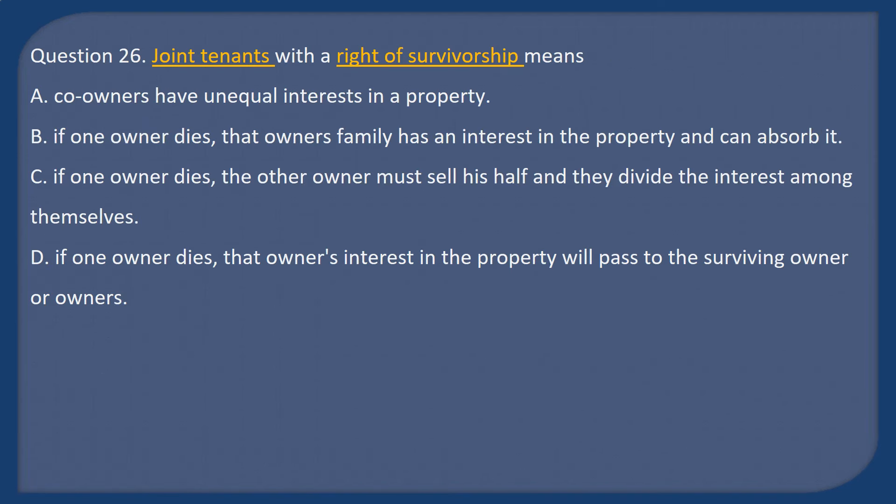Question 26: Joint tenants with a right of survivorship means: A. Co-owners have unequal interest in a property. B. If one owner dies, that owner's family has an interest in the property and can absorb it. C. If one owner dies, the other owner must sell his half and they divide the interest in the property. D. If one owner dies, that owner's interest in the property will pass to the surviving owner or owners.